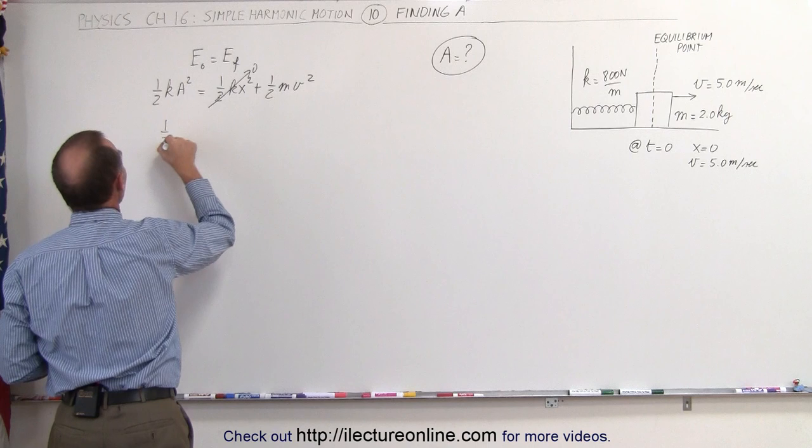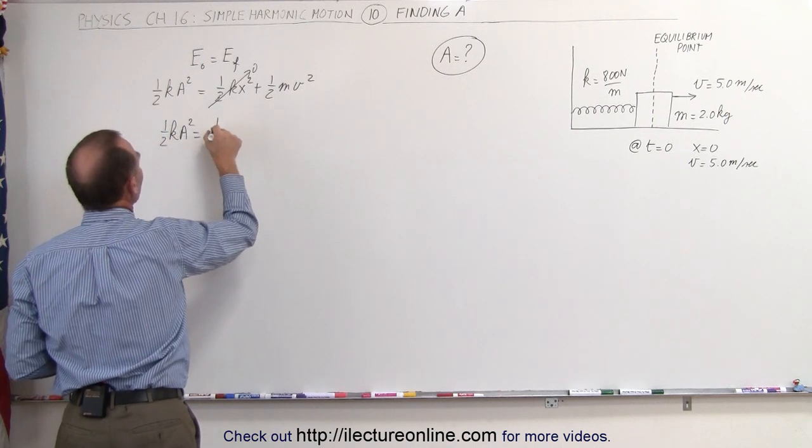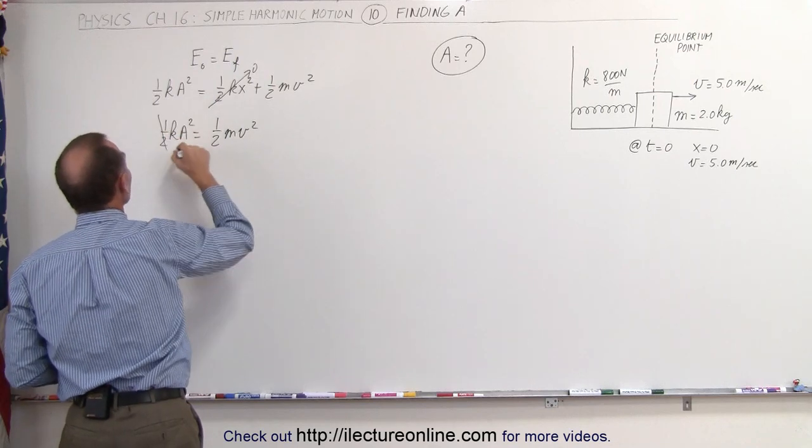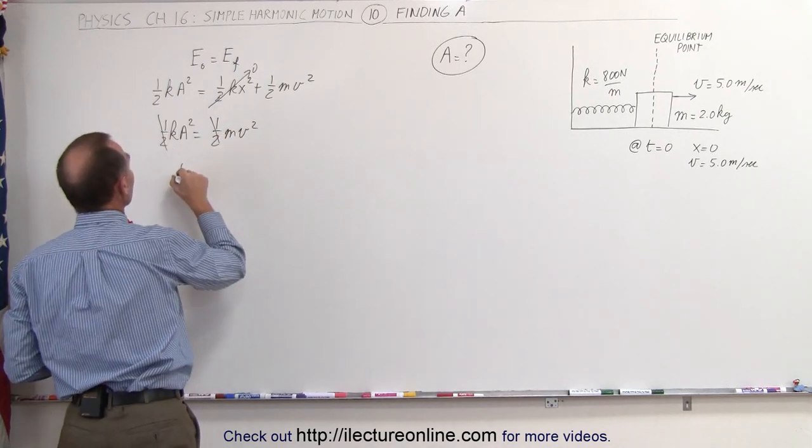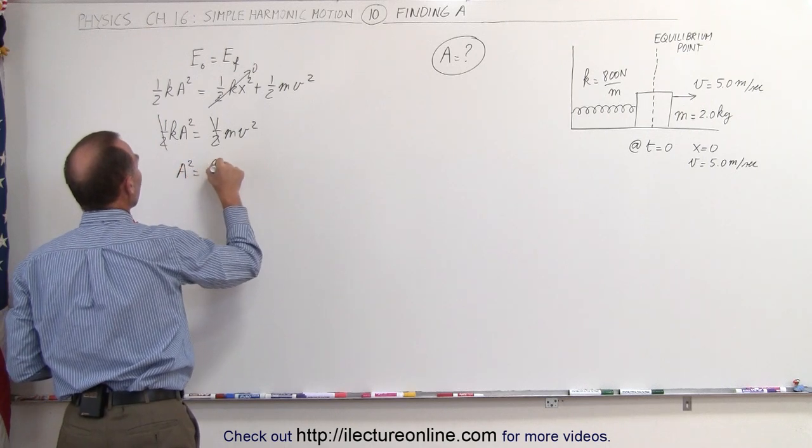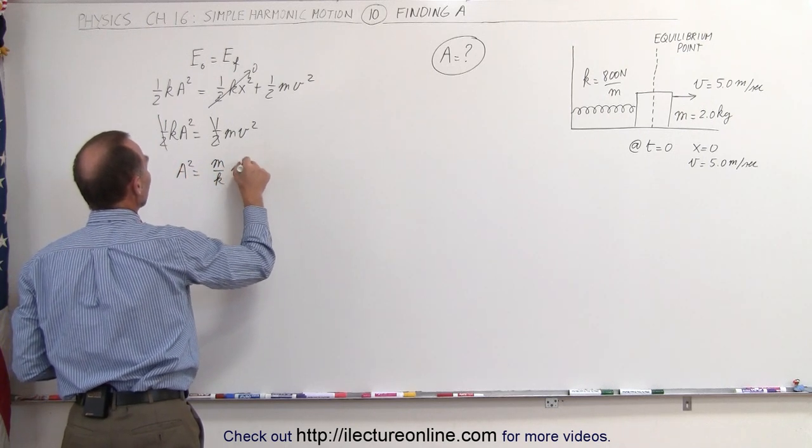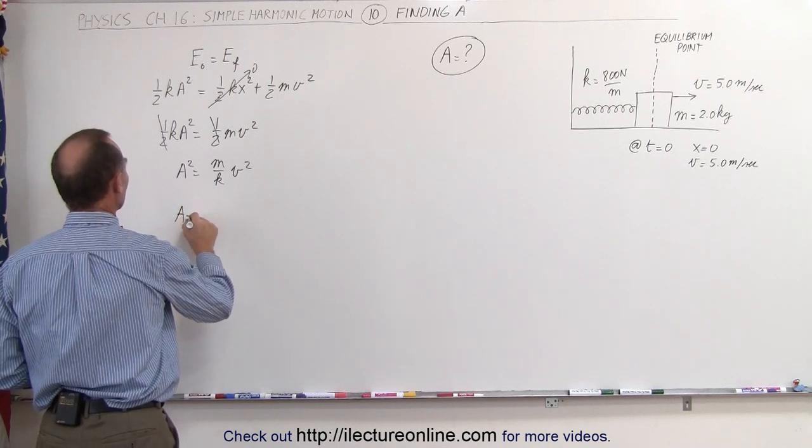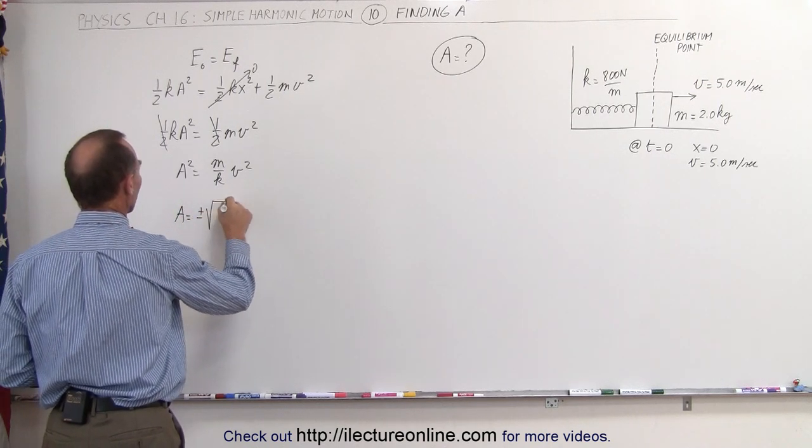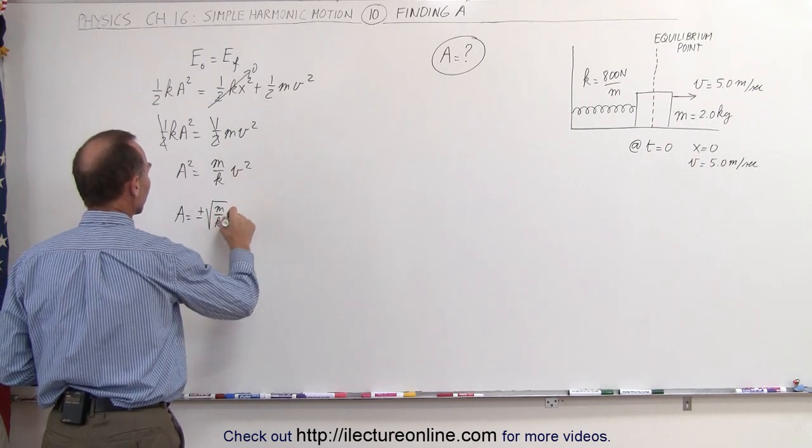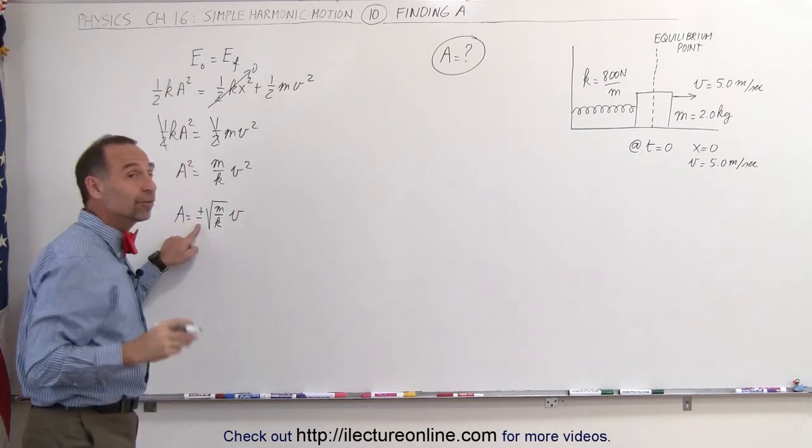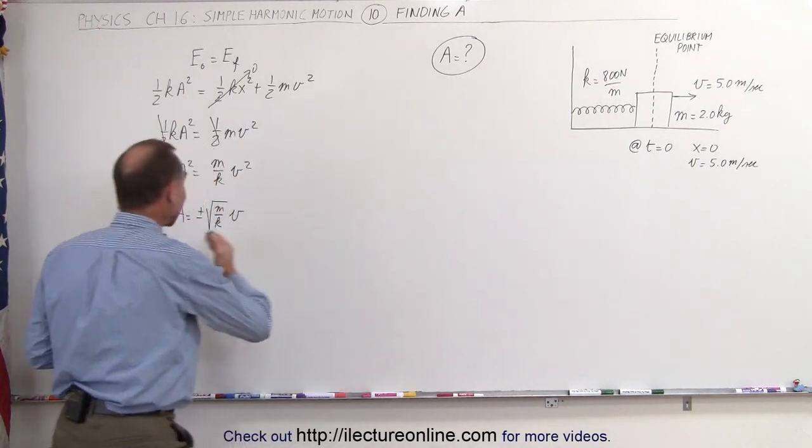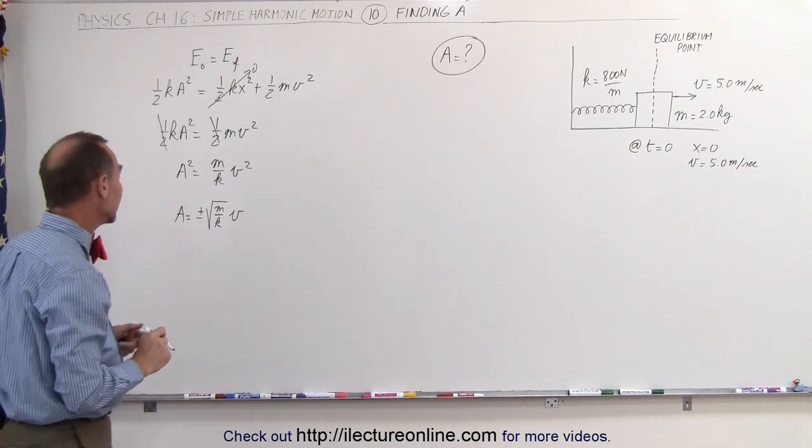So we can say that one-half ka squared is equal to one-half mv squared. The one-halves cancel out, we solve this for a, we can then say that a squared is equal to m divided by k times v squared. Now taking the square root of both sides, we get a is equal to plus or minus the square root of m divided by k times the square root of this, which is v. The plus or minus means that a can be either positive, which is to the right of the equilibrium point, or negative, which is to the left of the equilibrium point.